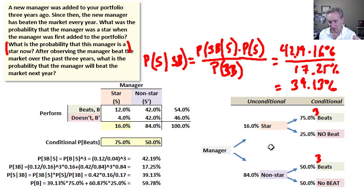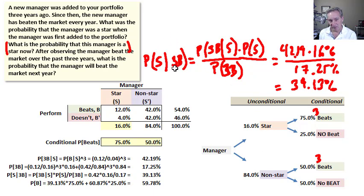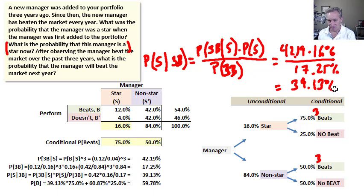So let's step back to see what Bayes did for us. We started with an unconditional 16% probability that a manager is a star. When the manager joined the fund three years ago, that was our prior. Now, with the new evidence of three consecutive years of outperformance, our posterior probability has jumped to 39.13% — we're much more confident this is a star manager.